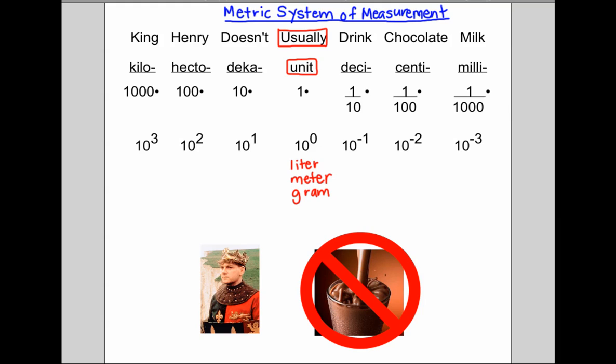The one that we use primarily in the United States is the customary system and that doesn't necessarily lend itself to being very simple because you don't necessarily just think about powers of ten.